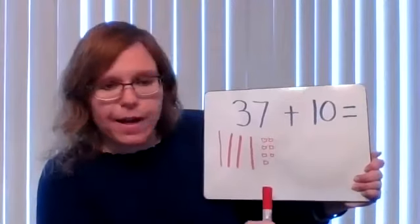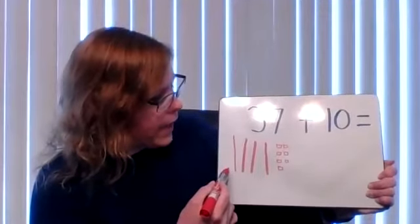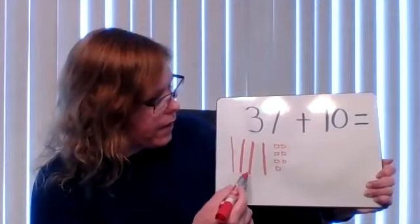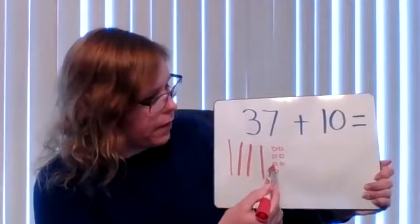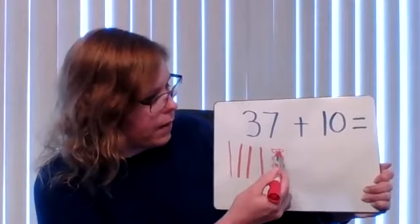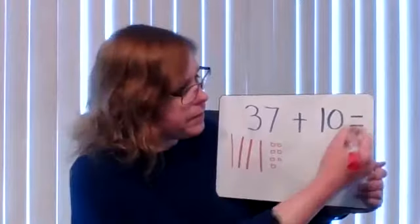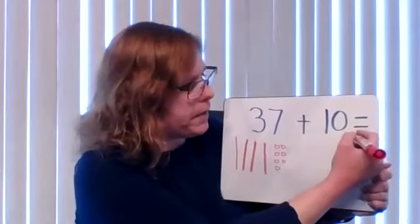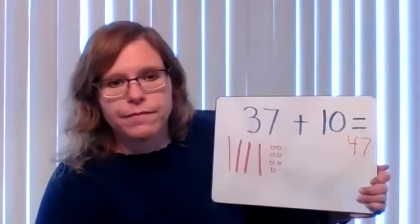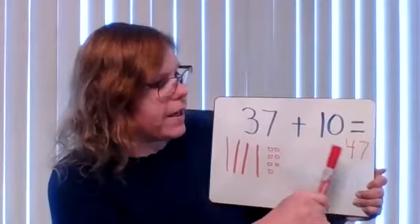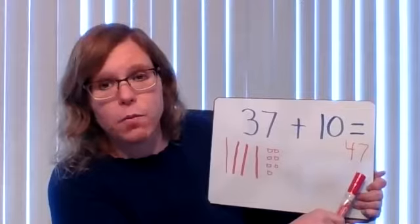So now I have my numbers represented here. So let's add up our tens and ones and see what our answer is. We have 10, 20, 30, 40, 41, 42, 43, 44, 45, 46, 47. So our answer is 47. So we have 37 plus 10 equals 47. And we know that means four tens and seven ones.